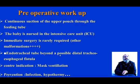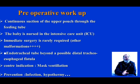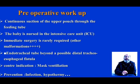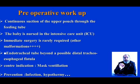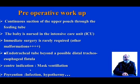Once the diagnosis of oesophageal atresia is confirmed, our pre-operative workup includes continuous suction of the upper pouch through the feeding tube. The baby should be nursed in the intensive care unit. Immediate surgery is rarely required. We should first assess for other malformations, especially cardiac. If needed, we must perform tracheal intubation beyond a possible distal tracheoesophageal fistula, as mask ventilation is contraindicated — it aggravates abdominal distension and dyspnea. As with every baby, we must prevent infections and hypothermia.